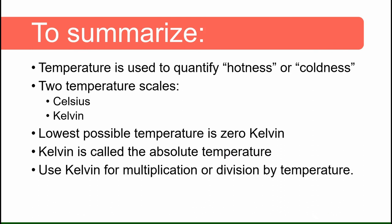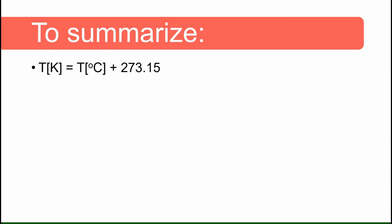Kelvin is used for multiplication and division by temperature. To convert degrees Celsius to Kelvin, you add 273.15 to your temperature value. To convert Kelvin to degrees Celsius, you subtract 273.15 from the Kelvin value.